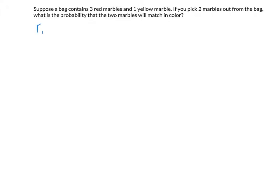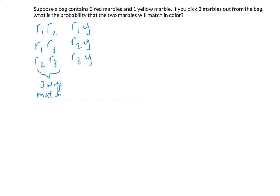If you think of each of the marbles as distinct — Red 1, Red 2, and Red 3 — you can get Red 1 and Red 2, Red 1 and Red 3, and Red 2 and Red 3. Those are three ways they match. The other three outcomes are Red 1 and Yellow, Red 2 and Yellow, and Red 3 and Yellow — three ways they don't match.